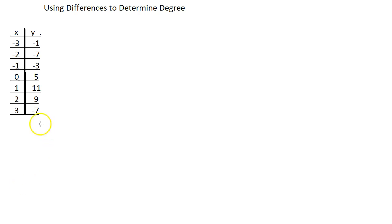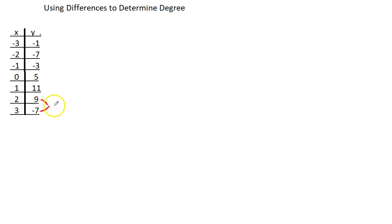What we are going to do is actually take and find the difference — take the value from the larger x value minus the one just before it. Now, we are not subtracting x values; we subtract the y values. So that means I am going to take negative 7 minus 9. That is going to give me negative 16.